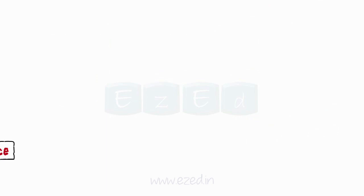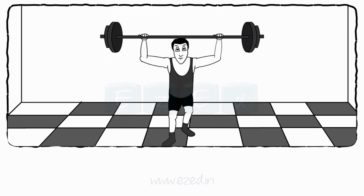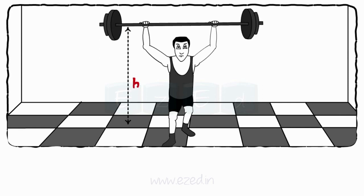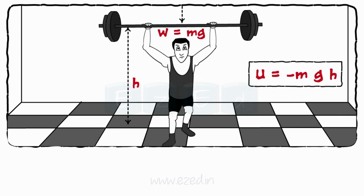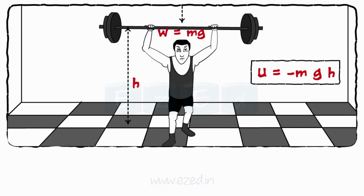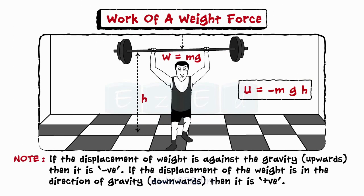How is work done by a weight force? Consider a bodybuilder lifting mass m — that is, weight equals mg. Weight is displaced vertically by height h. As the weight force is acting downwards, work done by the weight force is negative mgh. Consider the note while working for force under weight force.